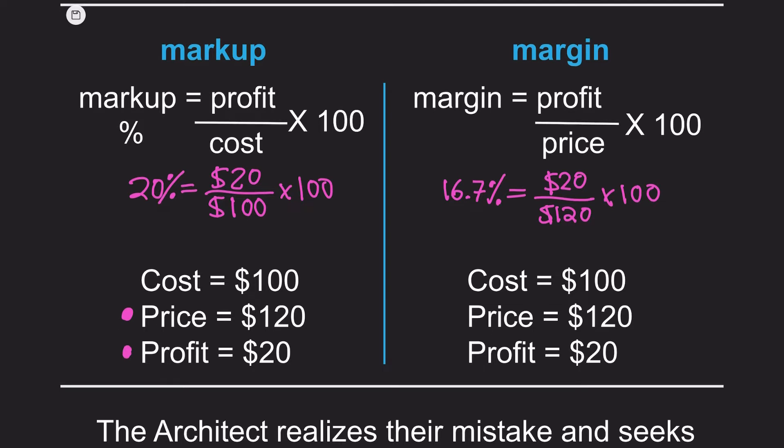The architect is really only making a 16.7% profit margin. This means that 16.7% of the billable hourly rate of $120 is kept by the architect, while the other 83.3% covers the cost of the architect and the firm. In other words, margin is a measure of how much of every dollar earned in revenue is kept by the firm after deducting all expenses. For every dollar the architect charges, the firm's profit is roughly 16 cents. The higher this margin, the greater the portion of revenue the firm keeps for every hour charged on a project.